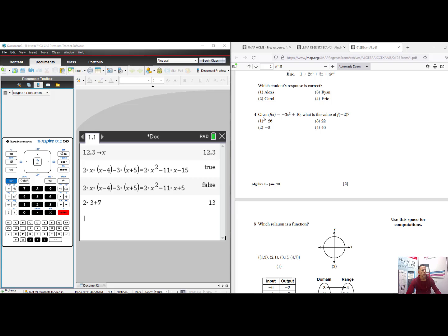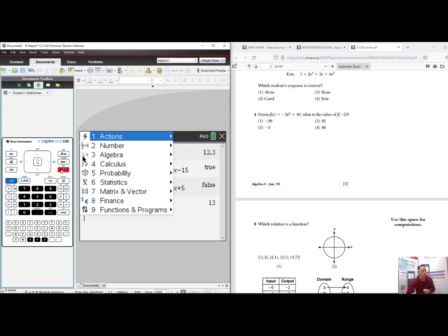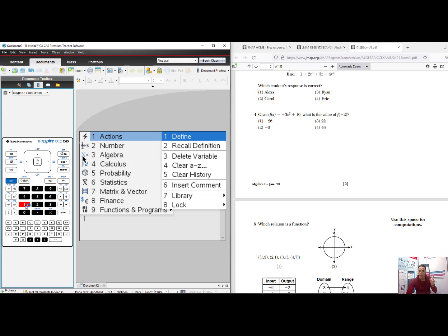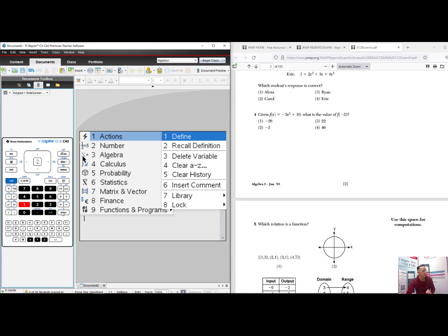In question 4, given f of x equals negative 3x squared plus 10, what is the value of f of negative 2? I want to show a feature of the Inspire that might be helpful for instruction. This won't be the easiest way to do the problem, but it will educate you on the power of the Inspire technology. I'll go to Menu, and I'll choose number 1, Actions. There is a command called Define. I will select Define, and I will define f1 of x to equal negative 3x squared plus 10. When I press Enter, it just says Done.